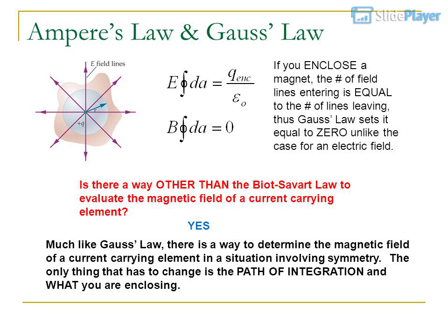Ampere's law and Gauss's law. If you enclose a magnet, the number of field lines entering is equal to the number of lines leaving. Thus Gauss's law sets it equal to zero, unlike the case for an electric field.